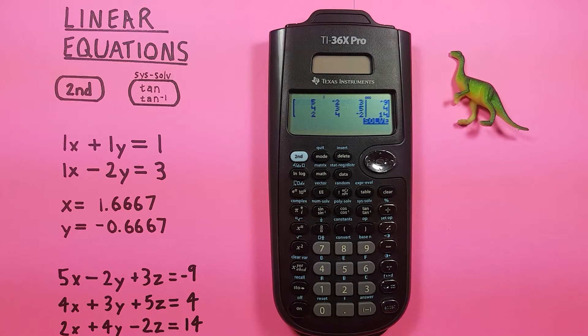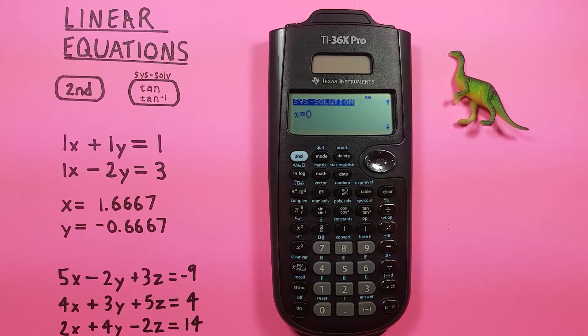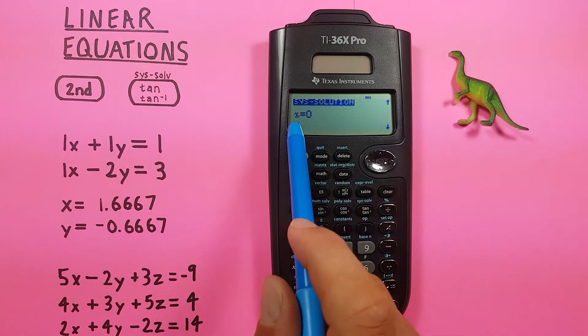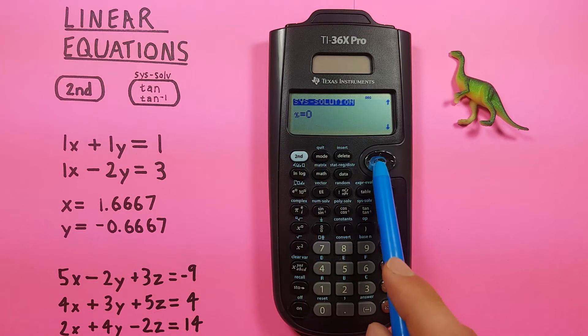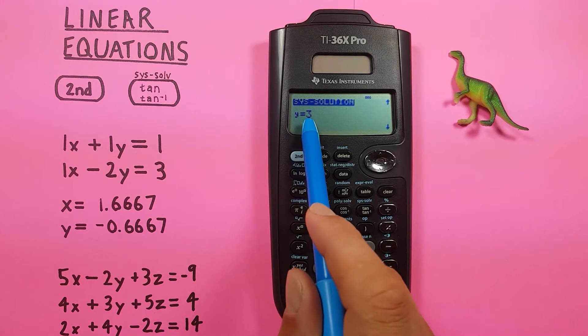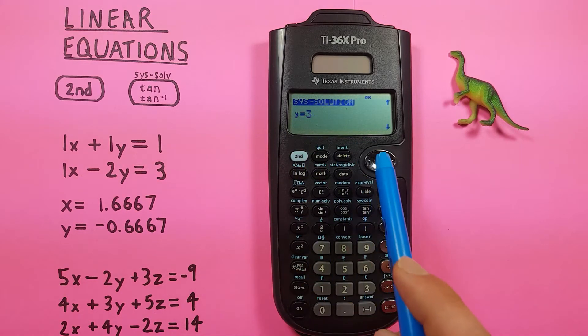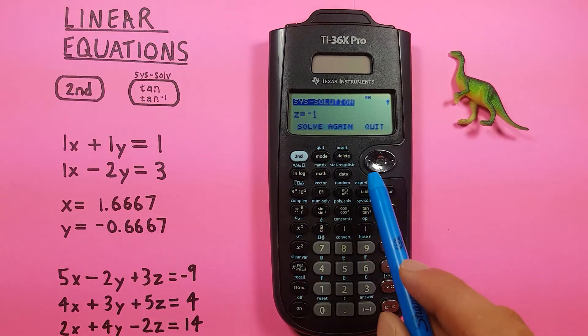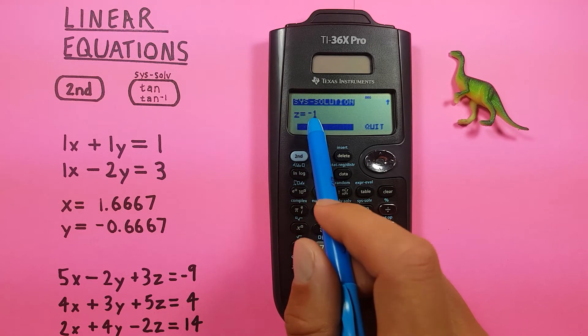If we press solve, you can see it brings us to this system solutions here, giving us an X equals 0, scroll down, a Y equal to 3, and down one more, and a Z equal to negative 1.